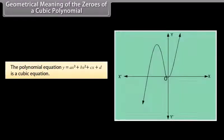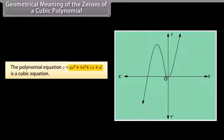Geometrical meaning of the zeros of a cubic polynomial: The polynomial equation y equals ax cubed plus bx squared plus cx plus d is a cubic equation. This is the shape of the graph for a cubic polynomial.